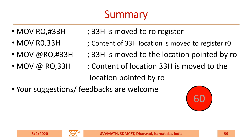Summary — you have to remember this. MOV R0, #33H — 33H is moved to R0 register. MOV R0, 33H (without hash) — the content of location 33H is moved to R0. MOV @R0, #33H — 33H is moved to the location pointed by R0. MOV @R0, 33H — the content of location 33H is moved to the location pointed by R0.